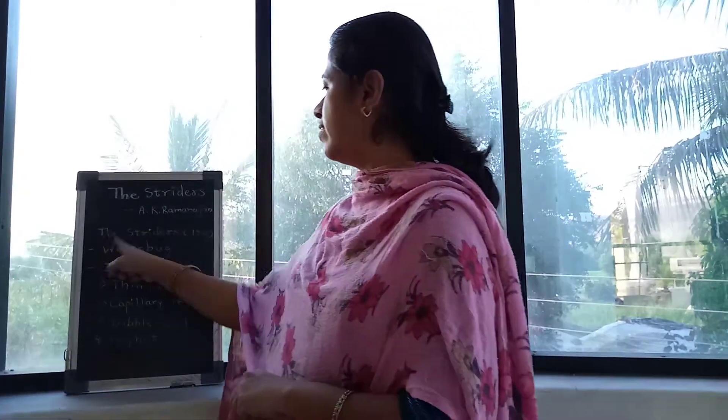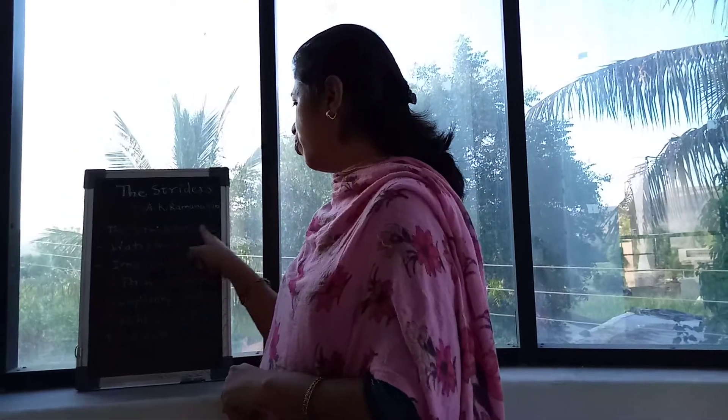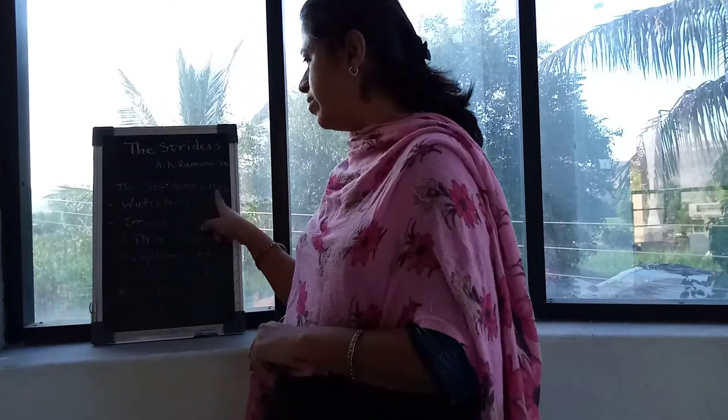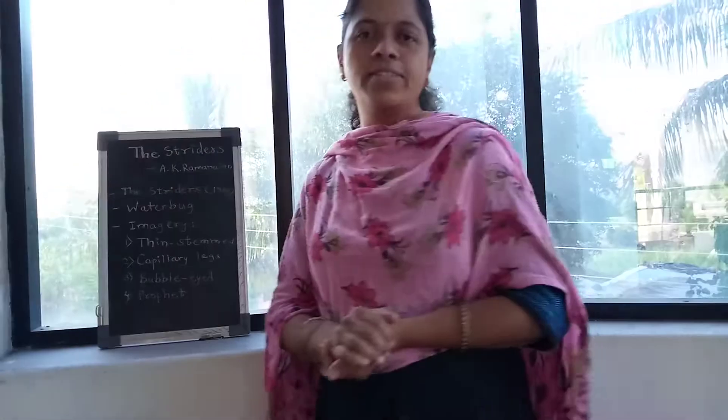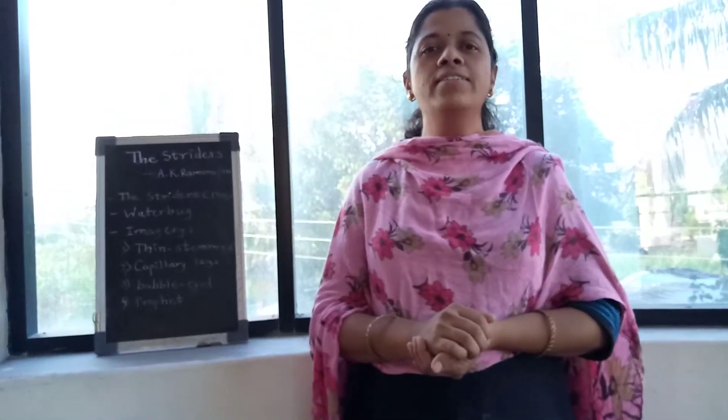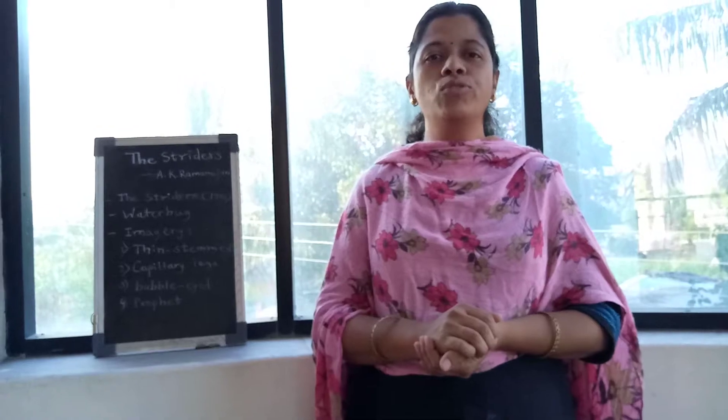A.K. Ramanujan's English output contains only two collections of poems: first, 'The Striders,' and second, 'Relations.' The Striders is the collection of poems published in 1966, and 'The Striders' is the title poem chosen from that collection.